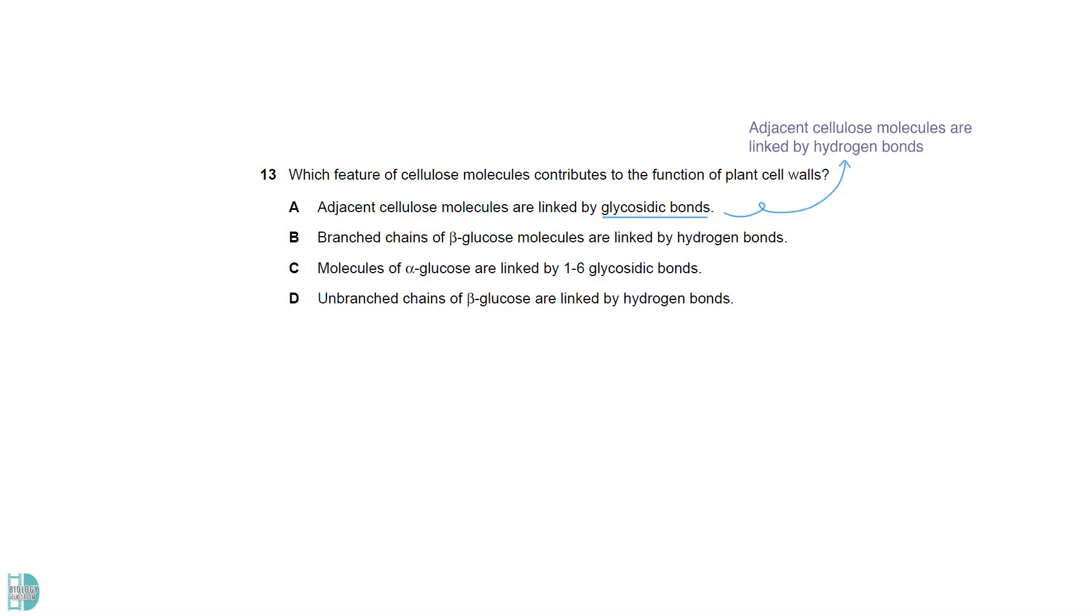Adjacent cellulose molecules are linked by hydrogen bonds, not glycosidic. B is incorrect because the molecule is linear or unbranched. The monomers of cellulose molecules are beta-glucose. The molecules are unbranched so there are no 1,6 glycosidic bonds. D is correct. Hydrogen bonds join the adjacent molecules to form microfibrils.